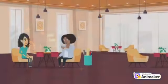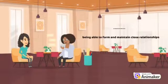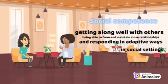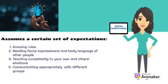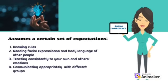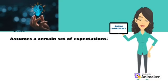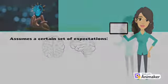Social sub-competence refers to getting along well with others, being able to form and maintain close relationships, and responding in adaptive ways in social settings. It assumes a certain set of expectations.